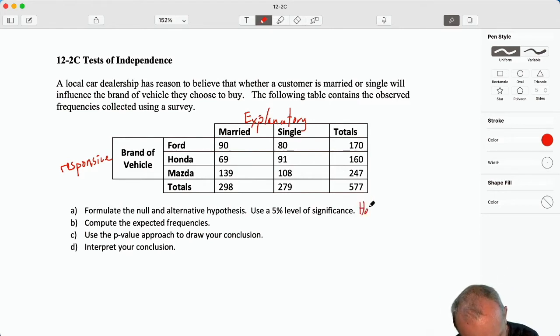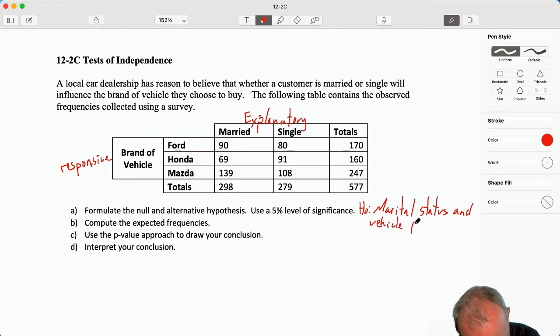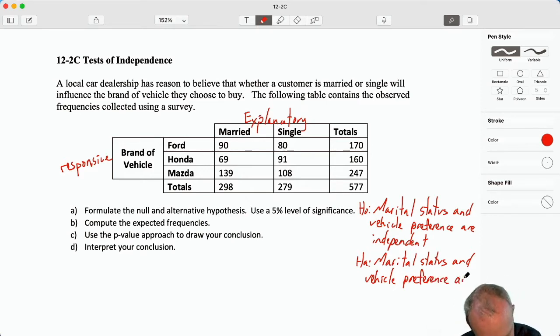Our null and alternative hypotheses: let's write this out longhand. Marital status and brand of vehicle, or vehicle preference, are independent. And the alternative hypotheses: marital status and vehicle preference are not independent. Okay, so there's our null and alternative.